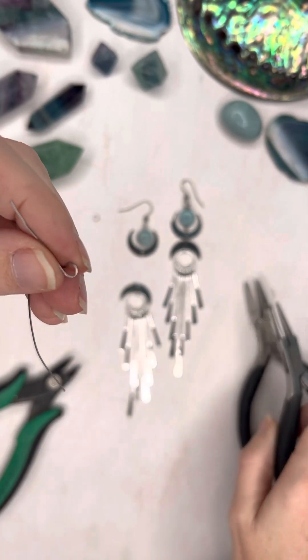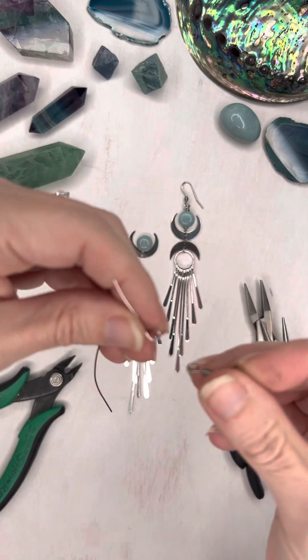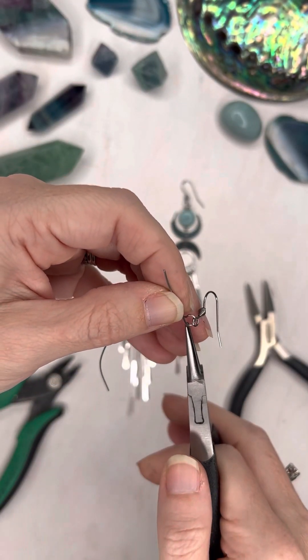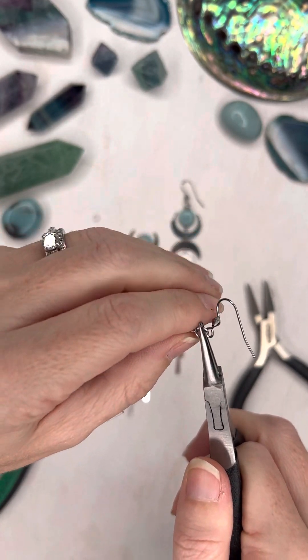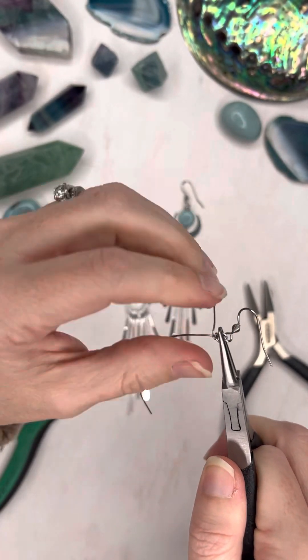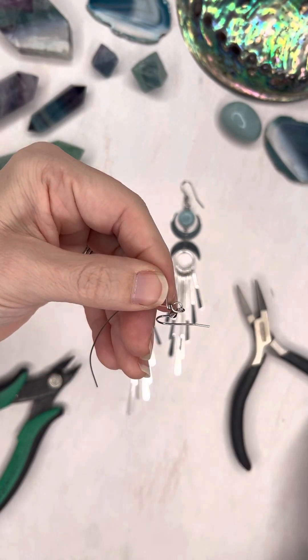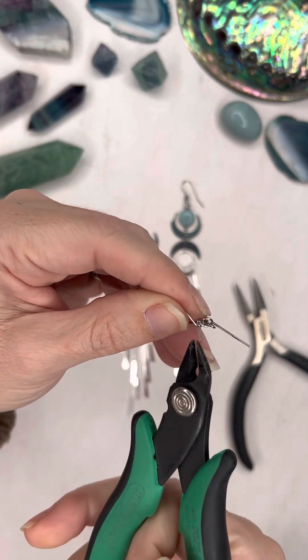And then this loop I'm going to attach to the ear wire. I'm going to hold it in the loop and coil it back around. Then I'm going to snip off the excess wire.